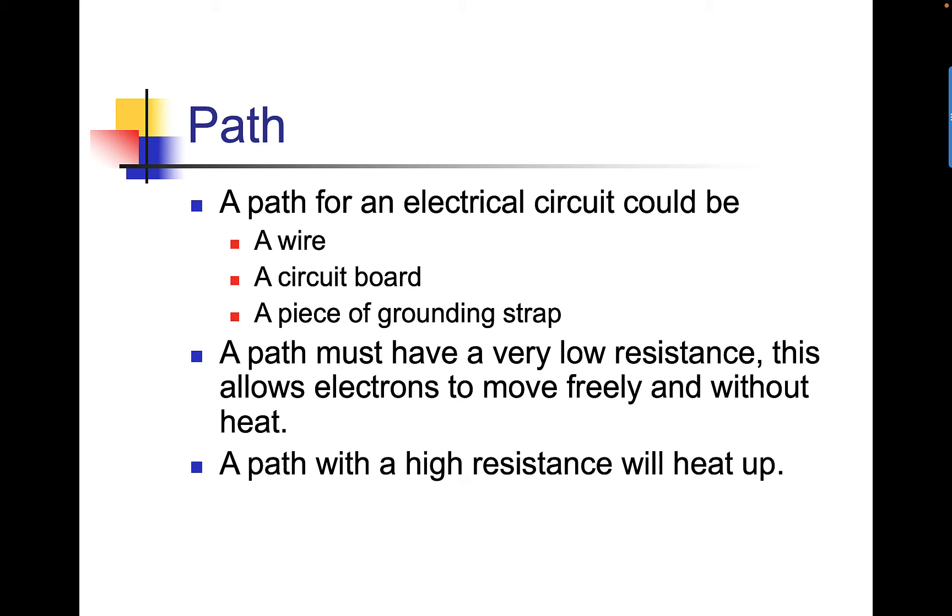A path for an electrical circuit could be a wire, a circuit board, or a piece of grounding scrap. A path must have a very low resistance. This allows electrons to move freely and without heat. A path with high resistance will heat up.